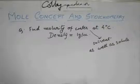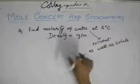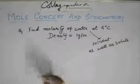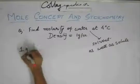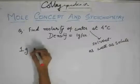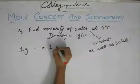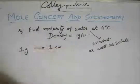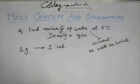Its density is 1 gram per cc. From density, we always approach it like this: it's 1 gram per cc, so 1 gram of water will have a volume of 1 centimeter cube — or you can say 1 cc equals 1 milliliter — so its volume would be 1 milliliter.